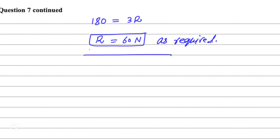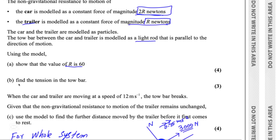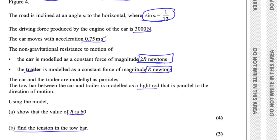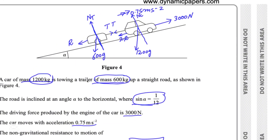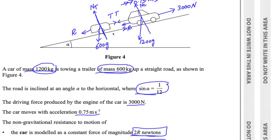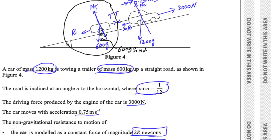The first part of this question is done. Moving on to Part B: find the tension in the tow bar. For this, you can consider either the trailer or the car. We will consider only the trailer. The angle alpha applies, and the weight 600G has two components — the component along the slope is 600G sin alpha, which is the one we need.